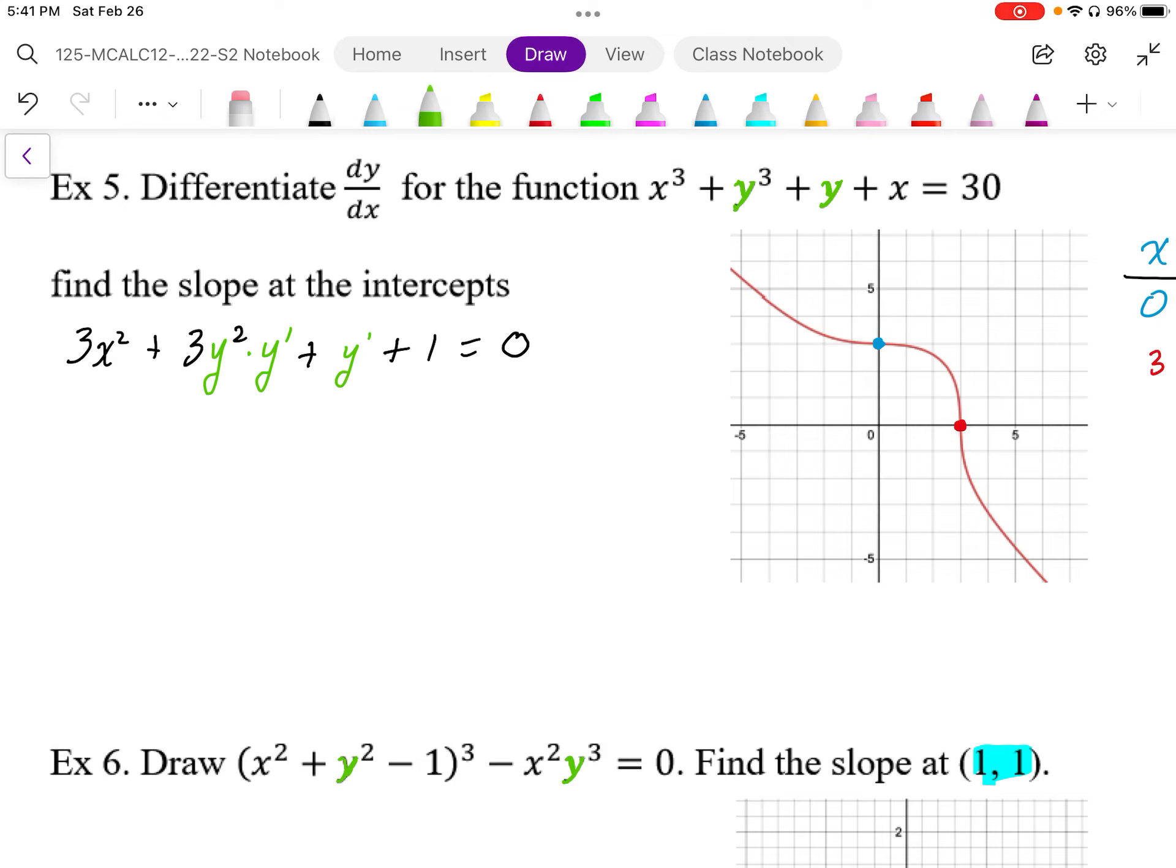So we're just going to isolate the y prime. Factoring out the y prime out of those terms, we're going to be left with 3y squared plus 1. And this is going to be plus 3x squared plus 1, and that's going to be equal to 0.